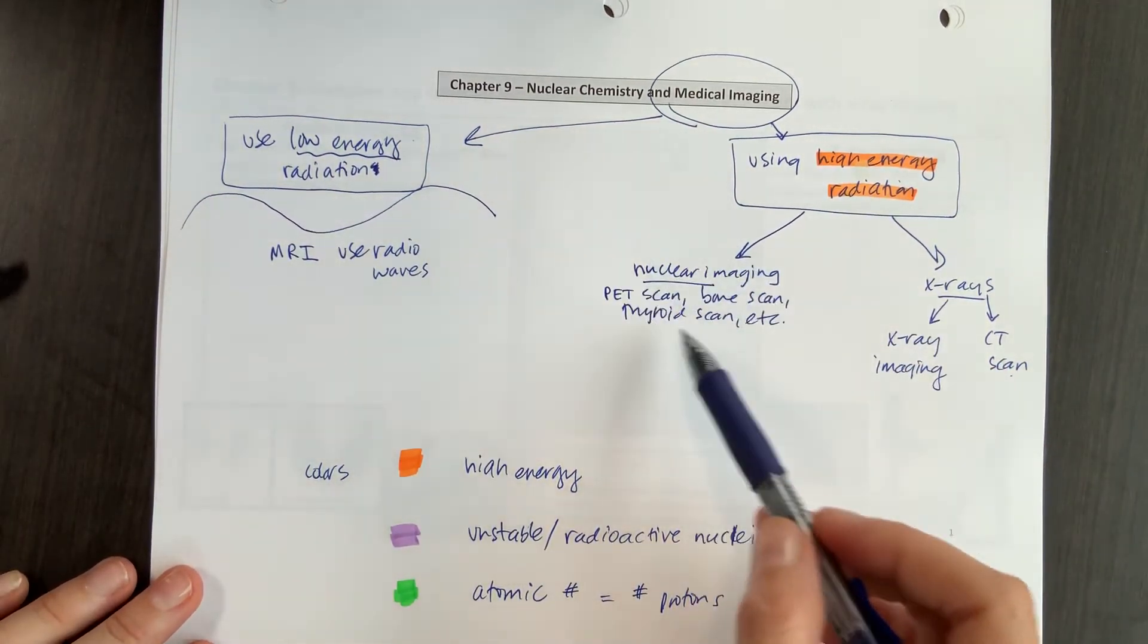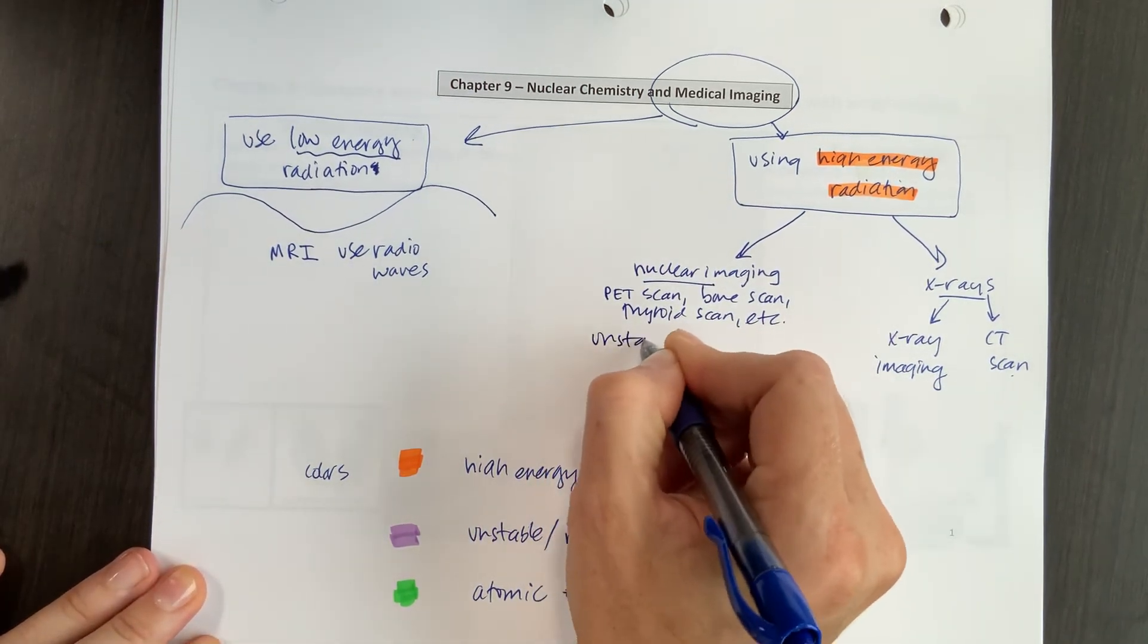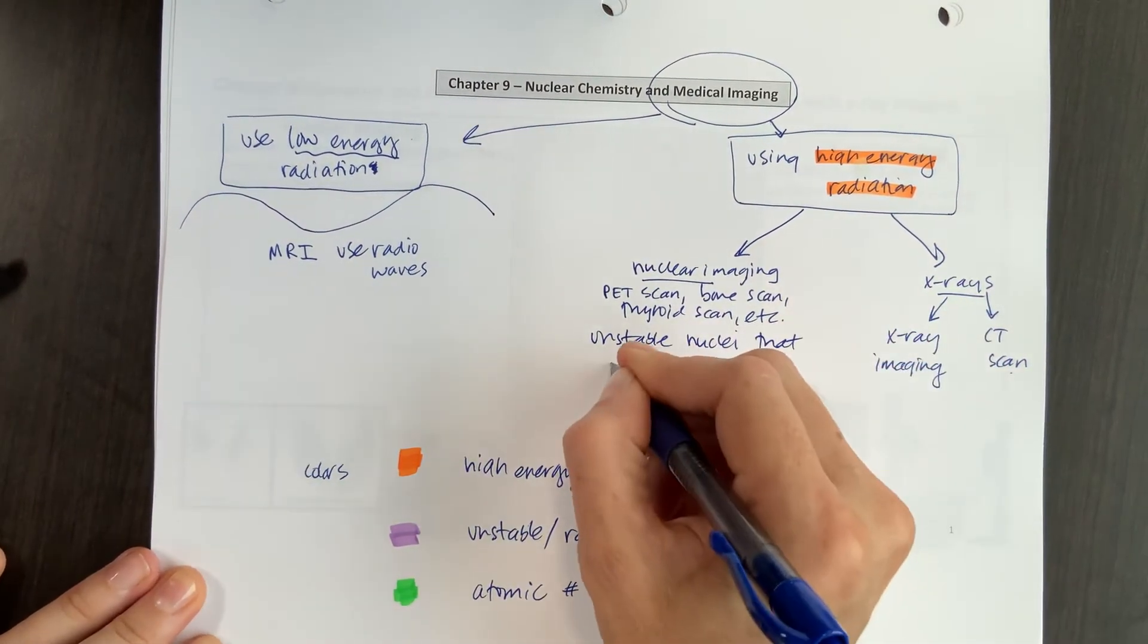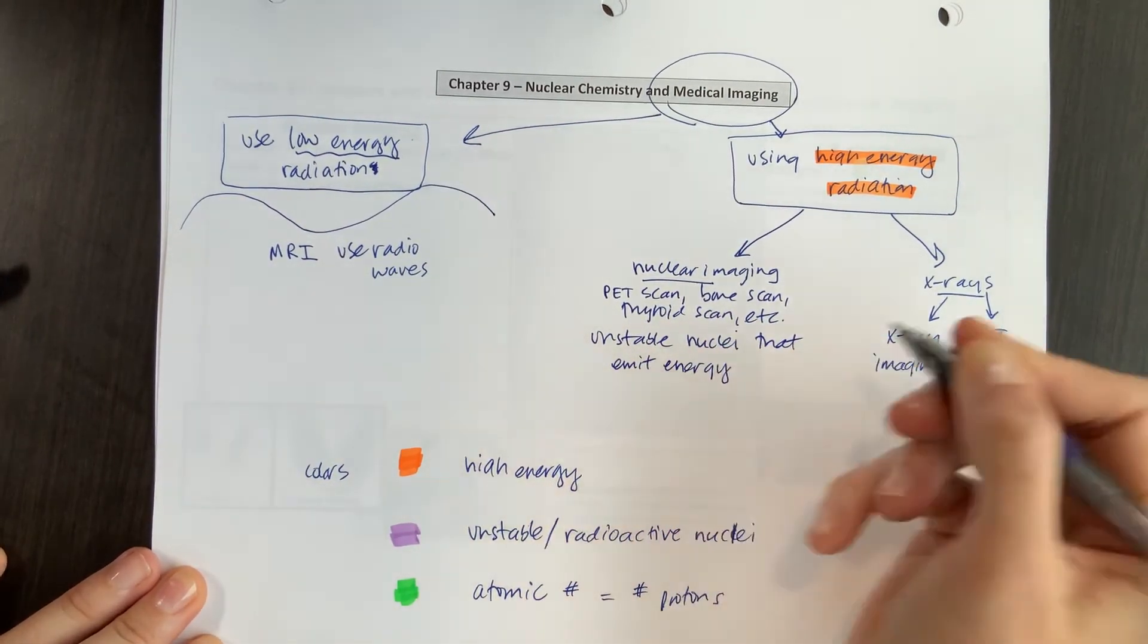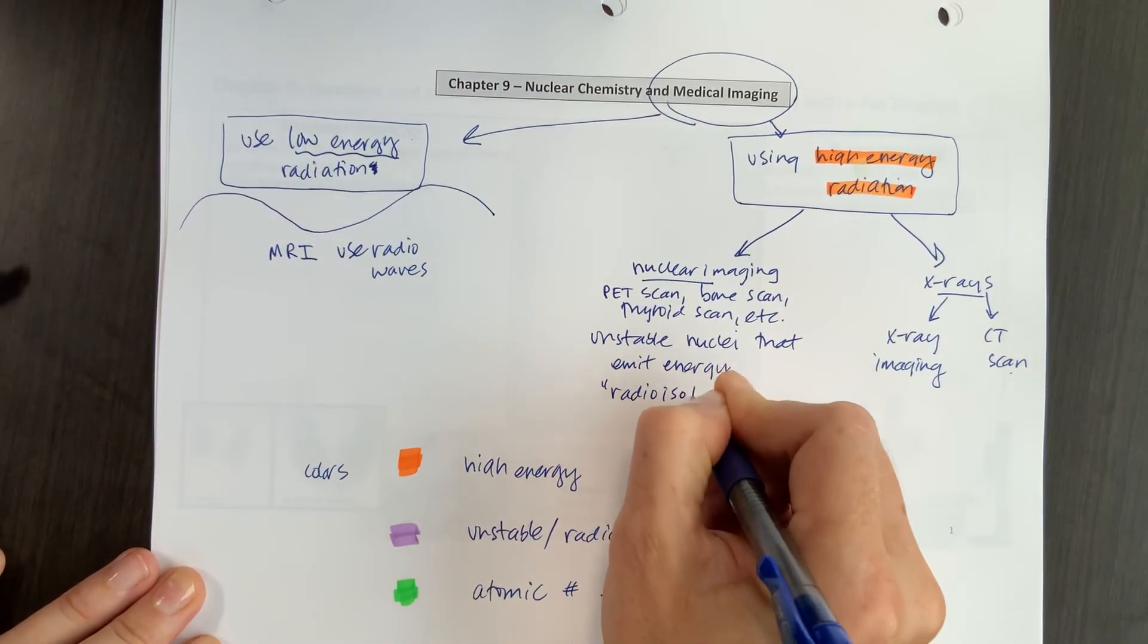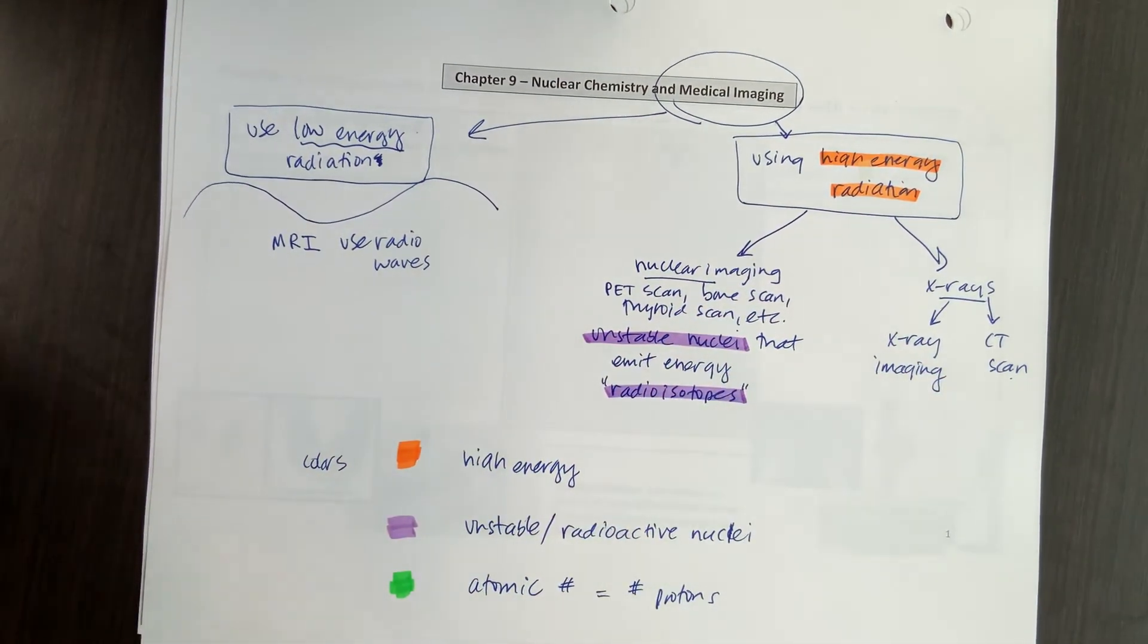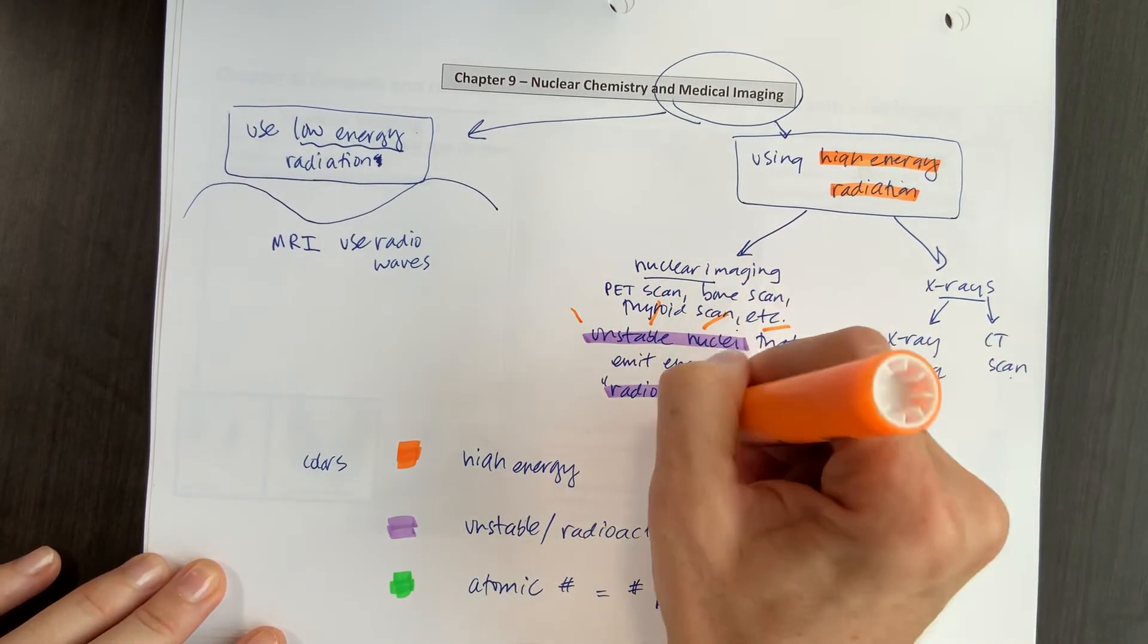And the way that we want to describe this nuclear imaging is it has to do with the nucleus. So we have unstable nuclei that emit energy or emit radiation. And we call these radioisotopes. And so these unstable nuclei, radioisotopes, they're the same exact thing, and these are going to be emitting radiation.